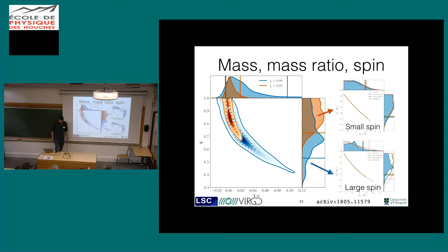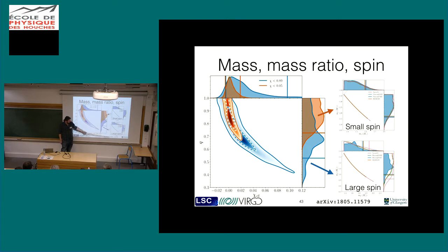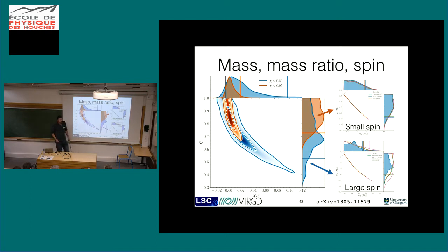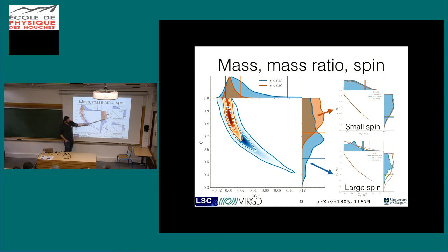There's also a more detailed analysis after the initial detection paper. There's a reanalysis with better waveform models and a larger range of tidal waveforms included compared to what we did in the first place. But they're all giving fairly consistent results in terms of the mass, at least when you include the small spin effect.